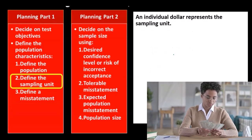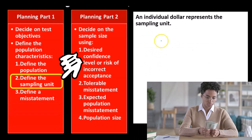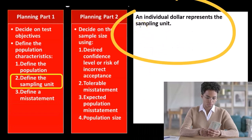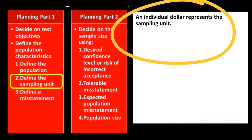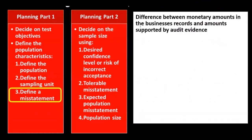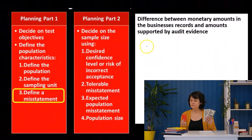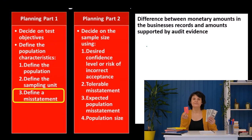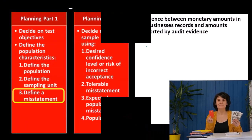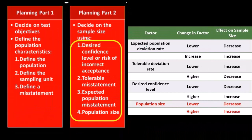Then we have define the sampling unit: an individual dollar represents the sampling unit, so the sampling unit will be dollars. Define a misstatement: the difference between the monetary amounts in the business records and the amounts supported by the audit evidence. We're going to go through the test, get the audit evidence, come up with an amount, and compare that to the amount reported on the business records.